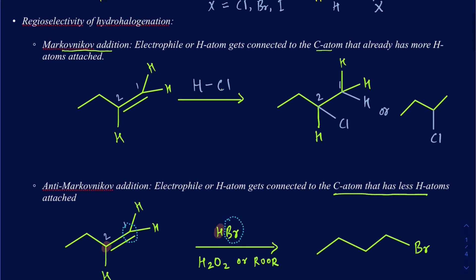These hydrohalogenation additions to alkenes are regioselective — you can get two different constitutional isomers depending on the conditions. It's always going to be Markovnikov's rule unless you're using ROOR or H₂O₂. You can use HCl, HBr, or HI for Markovnikov addition. However, anti-Markovnikov addition works with HBr only.